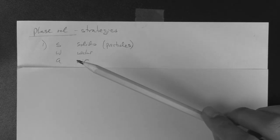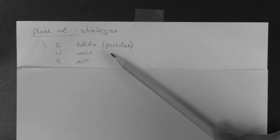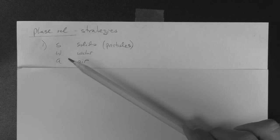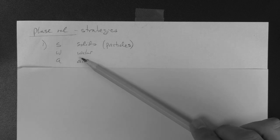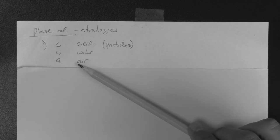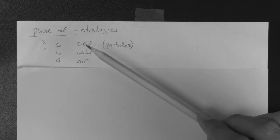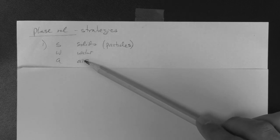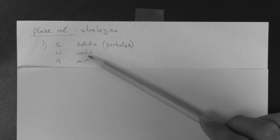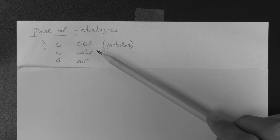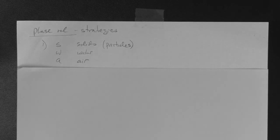The first one is to recognize that the soil is made of three components. The solids, which are the particles or grains, the water, W, and the air. Now, the solids are the grains, and the water and or air are present in the voids.